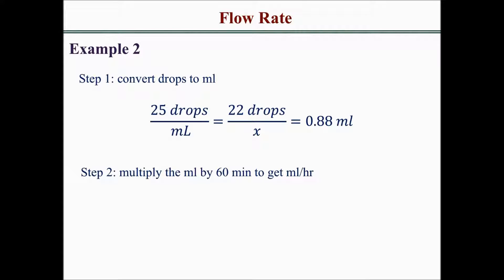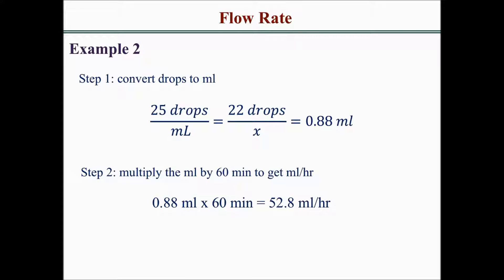The next step is to multiply the mLs by 60 minutes to get mLs per hour. Since 22 drops is 0.88 mLs, you multiply that by 60 minutes, and that tells you the patient is receiving 52.8 mLs per hour.